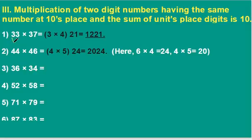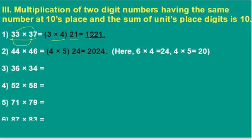For the numbers which have the same digit in the tens place and where the addition of the unit digits is 10, we have to use this trick. Here, 3 into 7 is 21 — 21 is the last two digits of our answer — and 3 into the next number of 3, that is 4: 3 into 4 is 12. Therefore the overall answer is 1221.